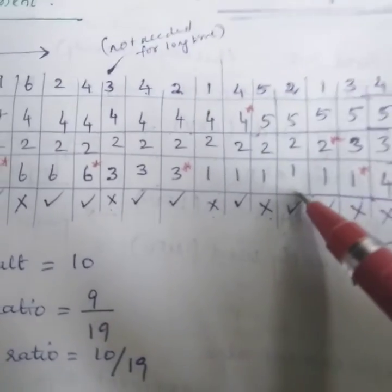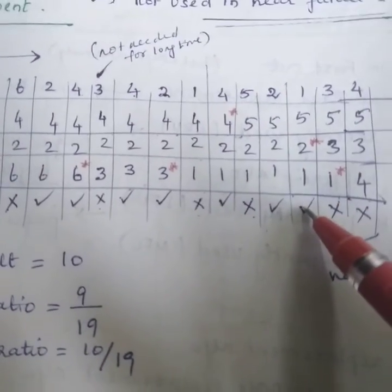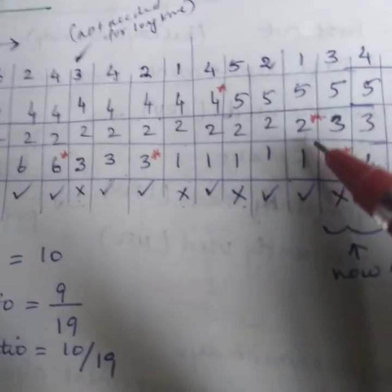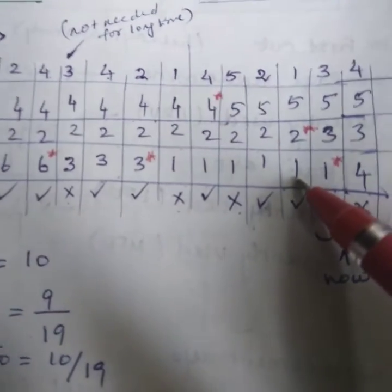Next two - two is coming, already two is here so it's a hit. Then one is coming, already one is here, it's a hit. Now need to accommodate three - no three here, so we have to replace. Five, two, one - where is five? No. Two? No. One?